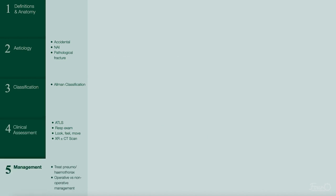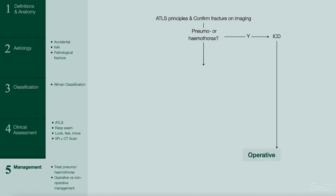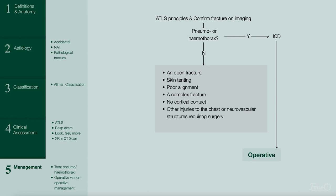Management: after ATLS principles have been applied and the fractures confirmed on imaging, if there is a pneumothorax or hemothorax, they will require an ICD and surgery. If there is no hemothorax or pneumothorax and there are no other indications for surgery — such as an open fracture, skin tenting, poor alignment, a complex fracture, no cortical contact, the presence of other injuries to the chest or neurovascular structures, or non-union post-conservative management — they will be treated non-operatively.